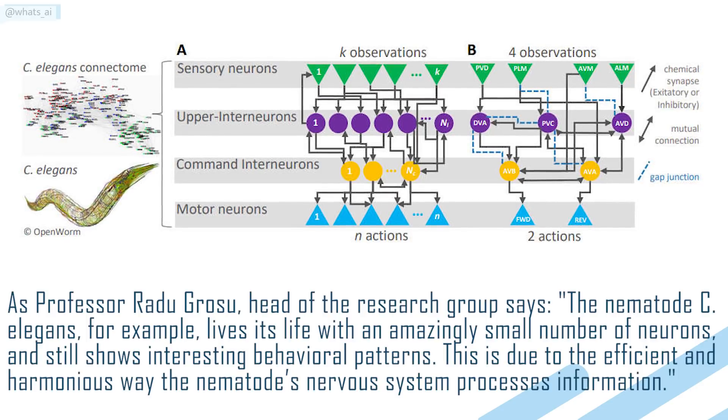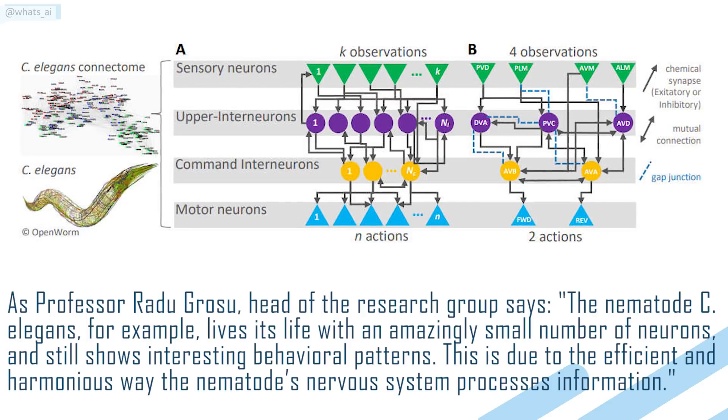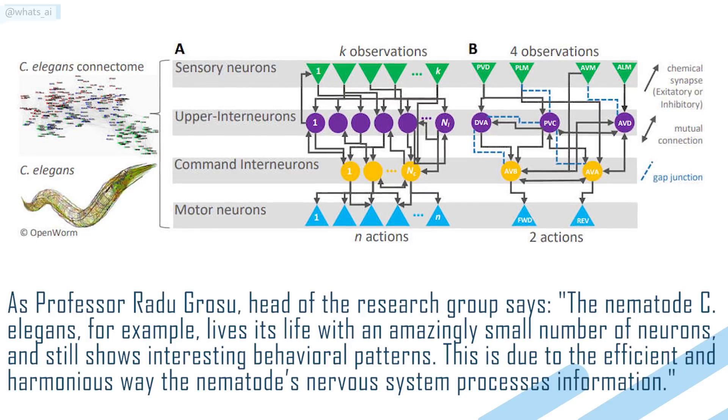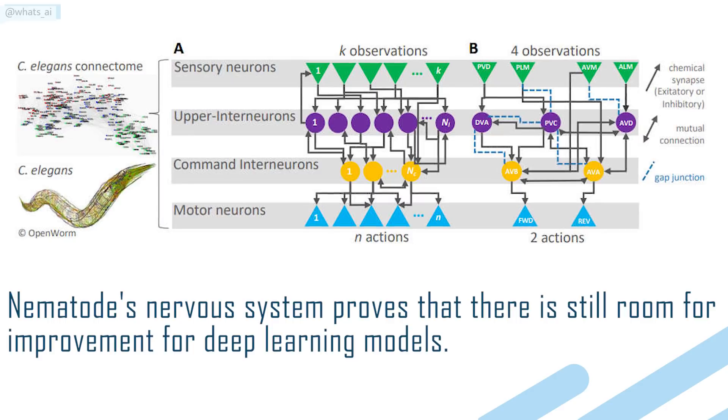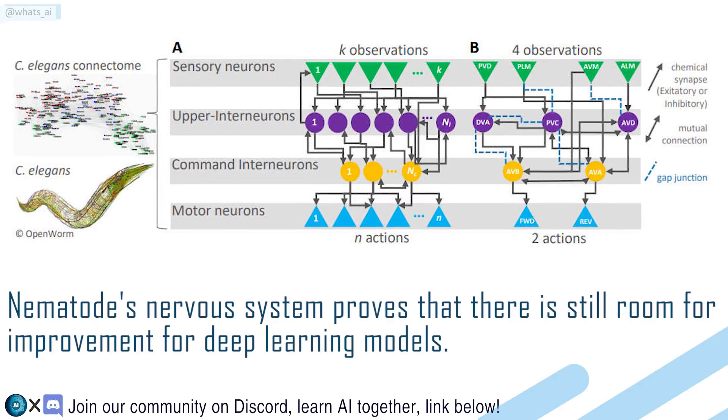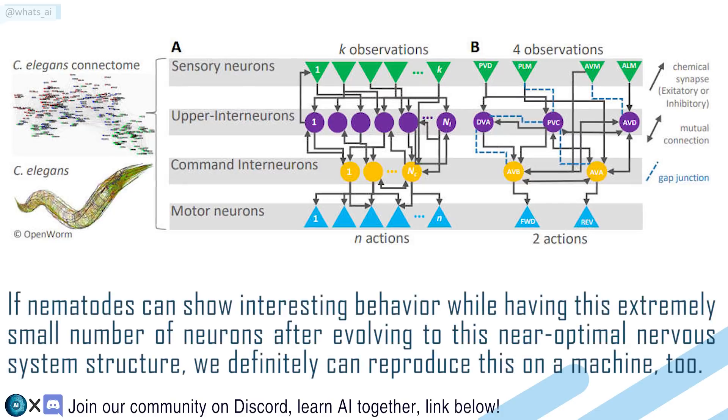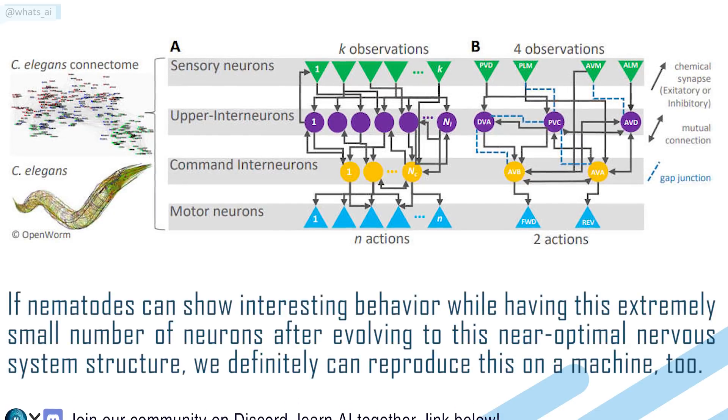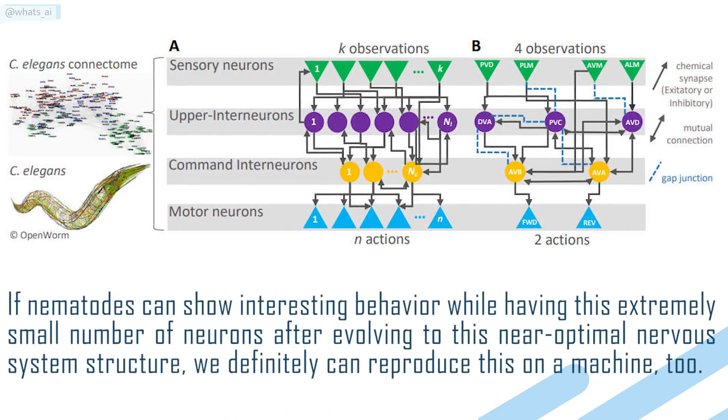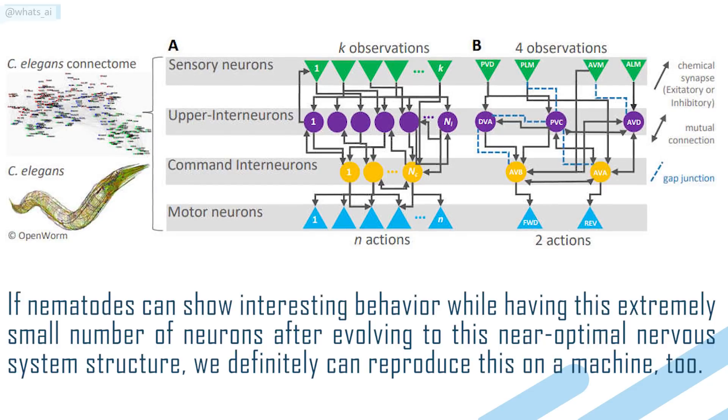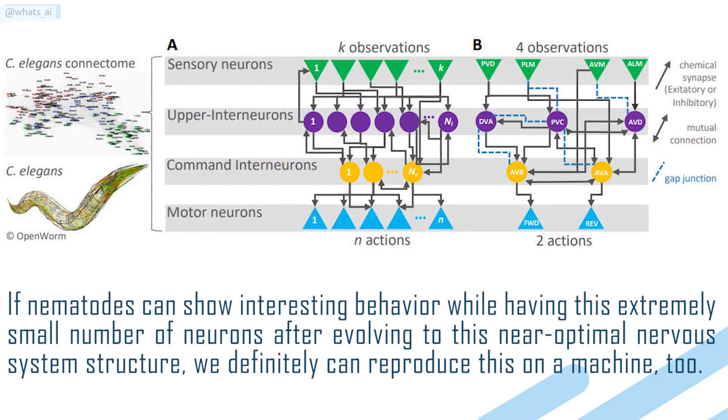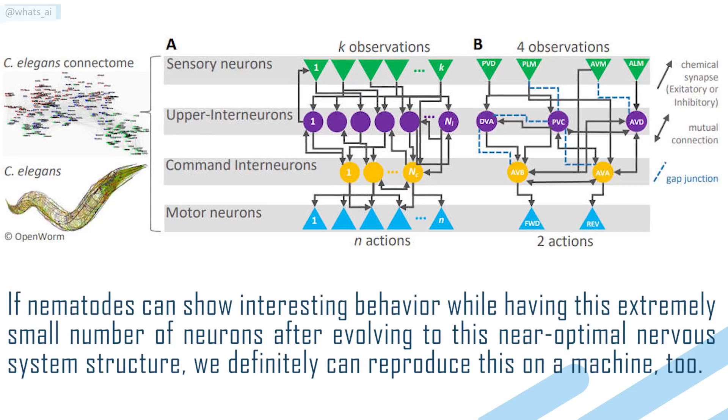This is due to the efficient and harmonious way the nematode's nervous system processes the information. Nematode's nervous system proves that there is still room for improvement for deep learning models. If nematodes can show interesting behavior while having this extremely small number of neurons after evolving to this near-optimal nervous system structure, we definitely can reproduce this on a machine too.